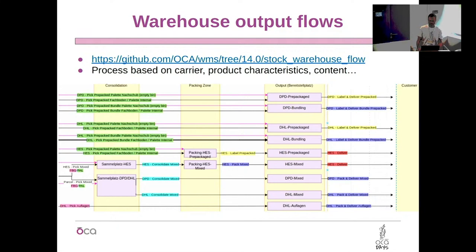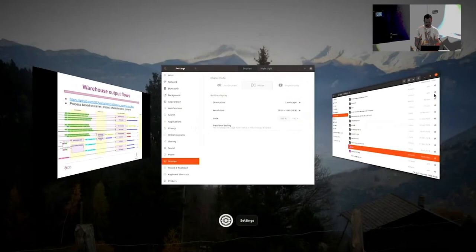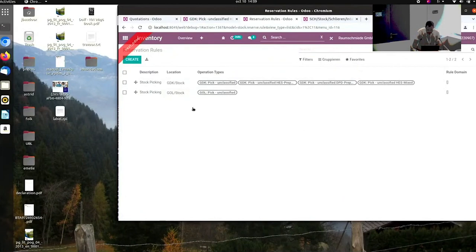What we have created is a module called Stock Warehouse Flow, available in version 14. It allows you to give rules — like the warehouse configuration — but based on information that's quite static: the carrier you know, the product, whether it's pre-packaged, whether you strap it, or the content of the order. All information you have when the sale order is placed, and you can decide the best strategy to bring the goods to what we call the customer location.